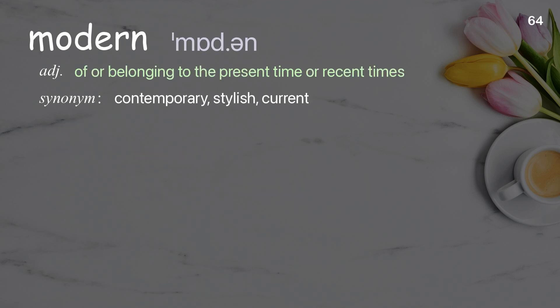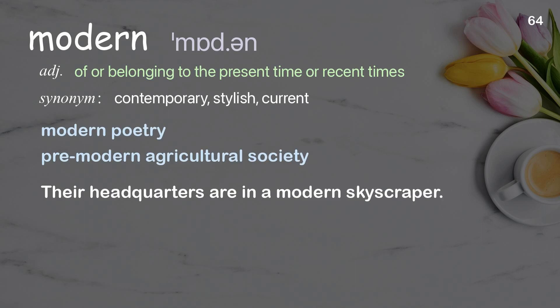Modern: of or belonging to the present time or recent times. Examples: modern poetry, premodern agricultural society. Their headquarters are in a modern skyscraper.